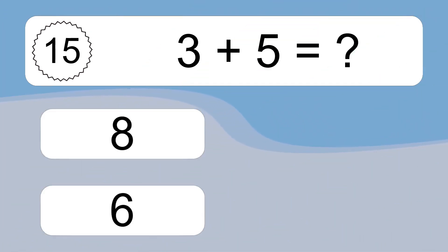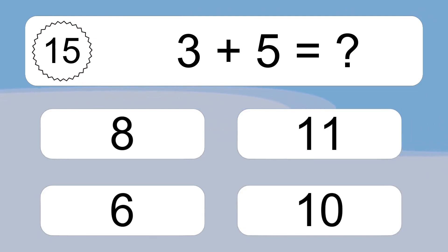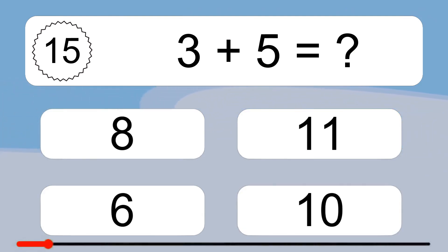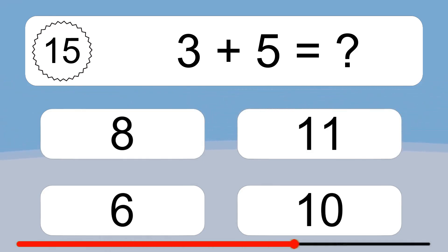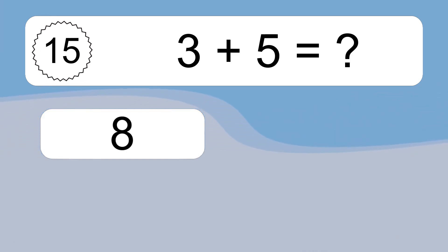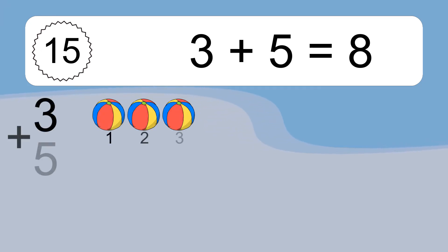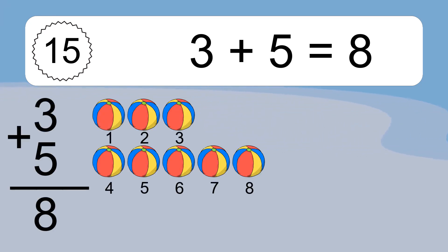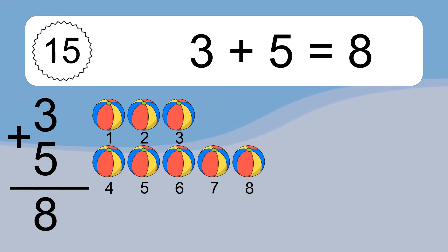3 plus 5 equals what? 3 plus 5 equals 8. Let's count it. 1, 2, 3, 4, 5, 6, 7, 8.